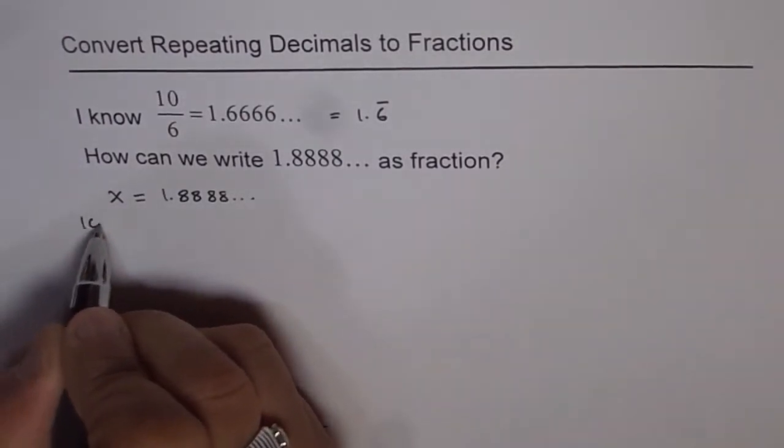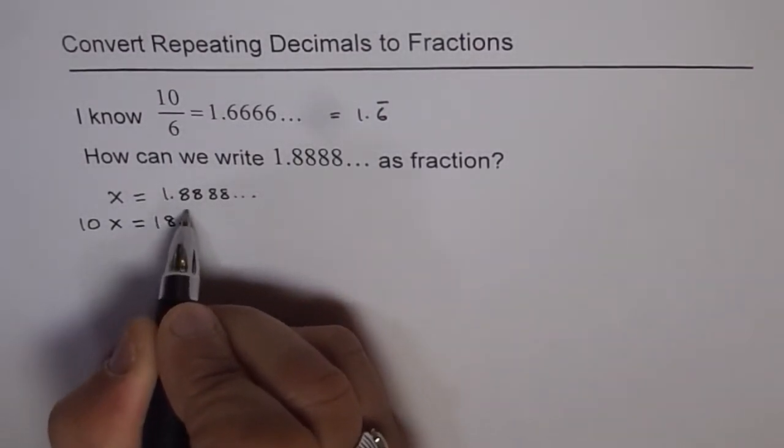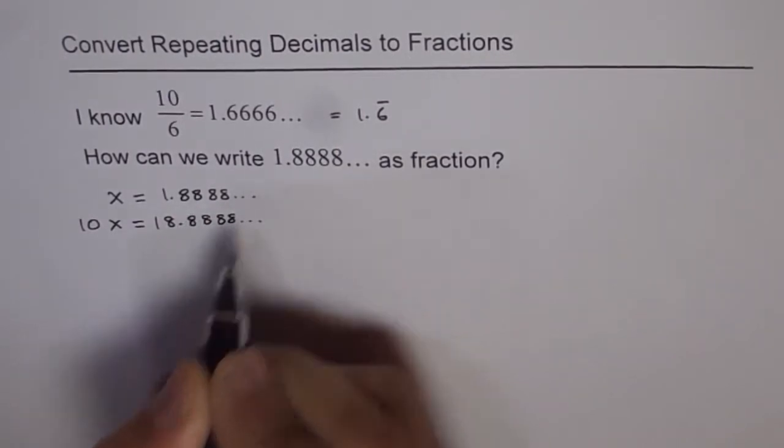So what is 10 times x equal to? 10 times x will be equal to 18 point 8888. It will move one position but again 8, 8, 8, 8 recurring.